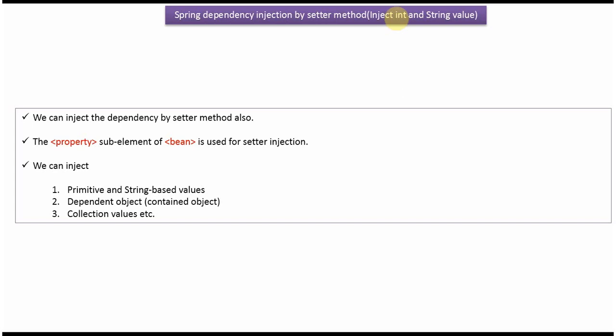This video tutorial covers how to inject string values using Spring dependency injection by setter method. Using the setter method we can inject the dependency. The property element is a sub element of bean, and using that we can do setter injection. We can inject primitive values, string based values, dependent objects, and collection values.